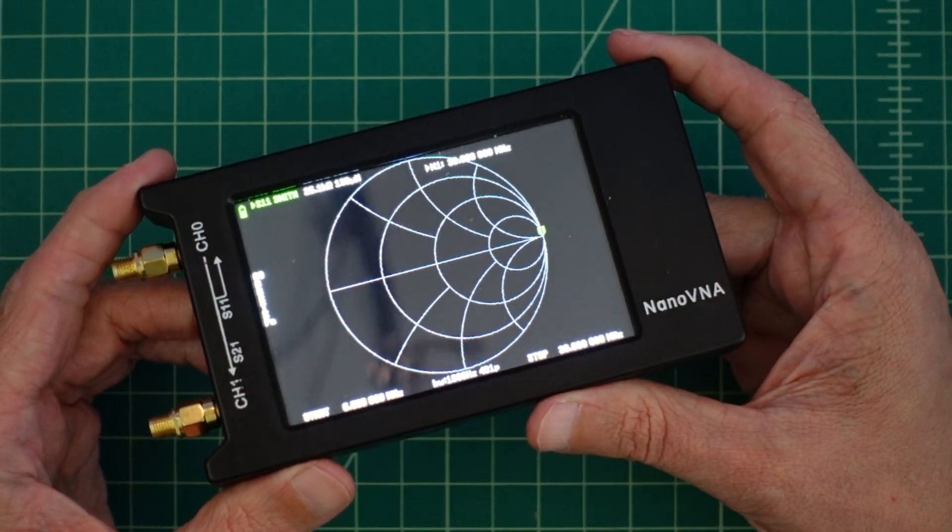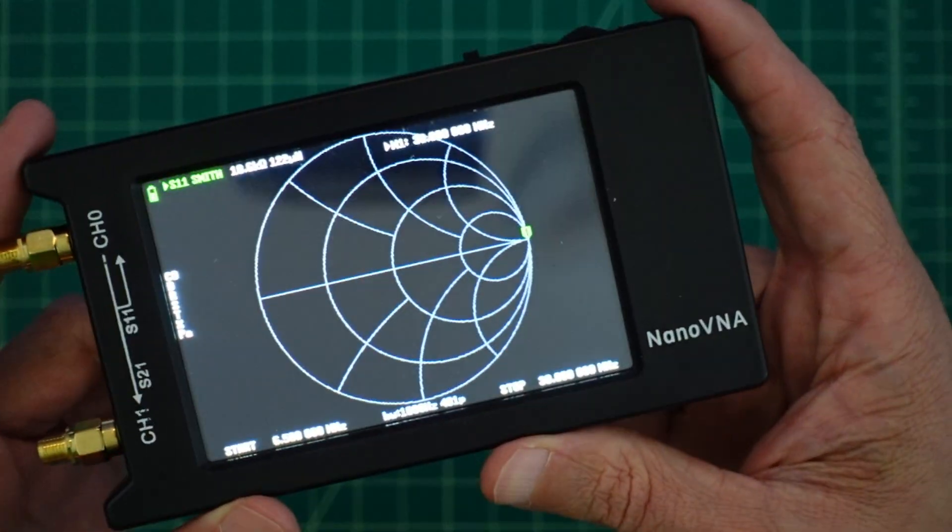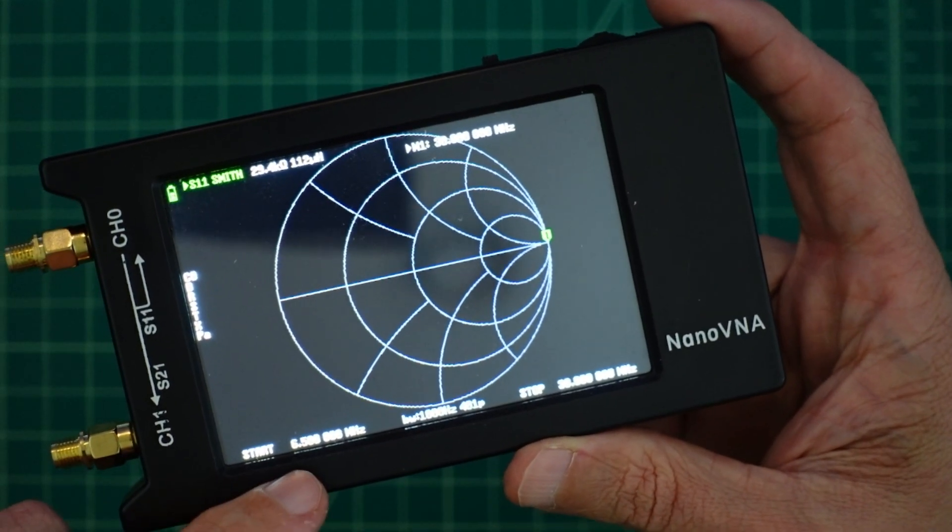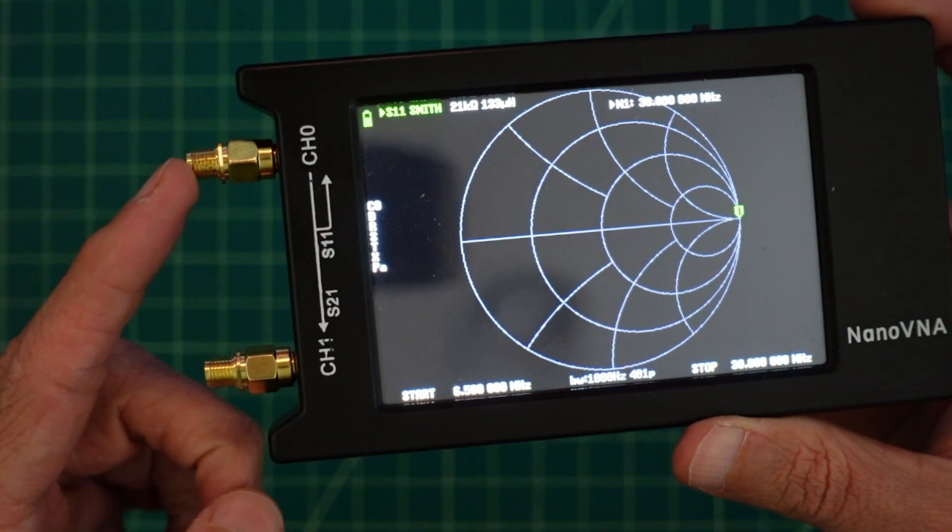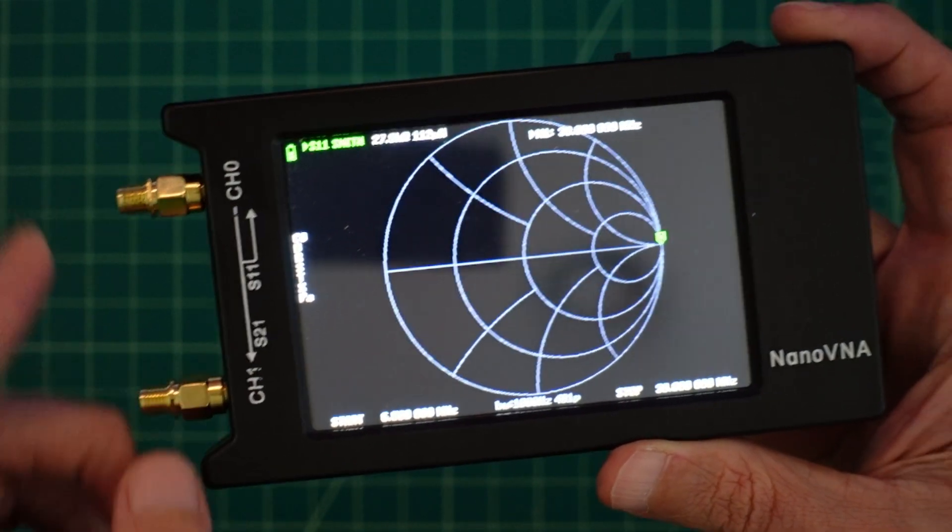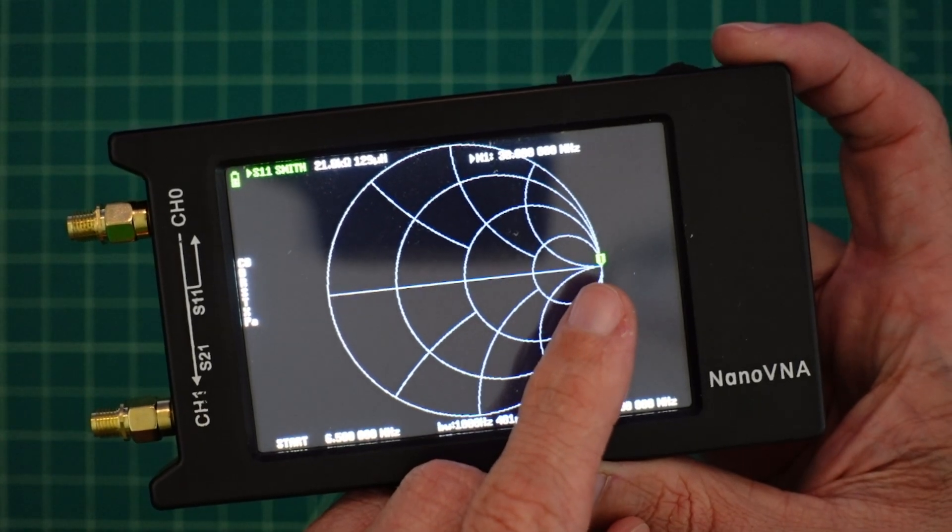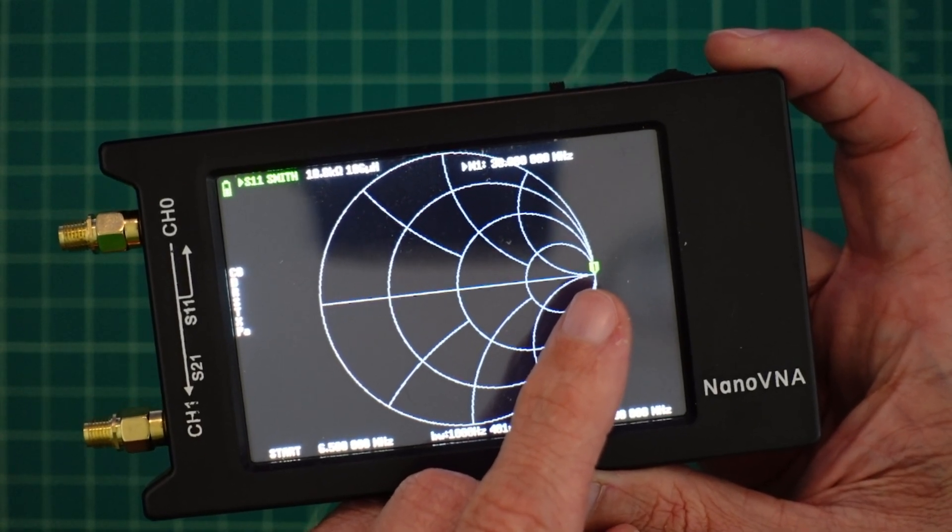Okay, so here you can see the nano VNA and it is fully calibrated to sweep from 6.5 megahertz all the way to 30 megahertz. It's calibrated to the end of these connection adapters and you can see with an open load we are over here and we are right on the line of resonance.